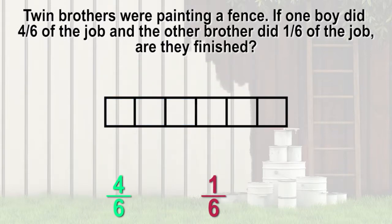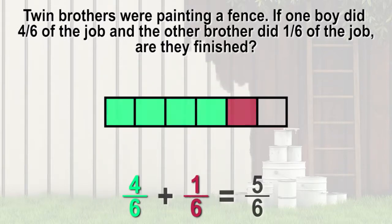If we create an area model, we can prove that 4 sixths plus 1 sixth equals 5 sixths or less than 1.